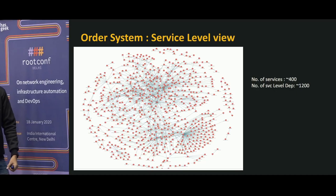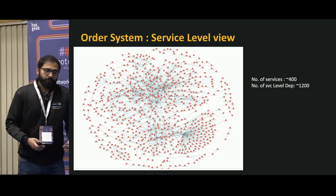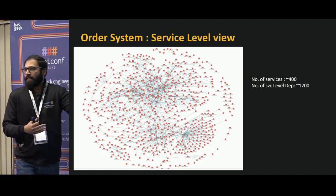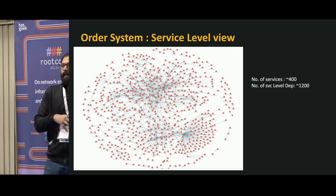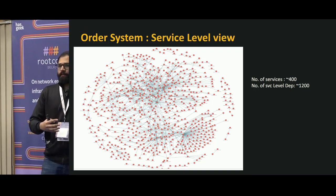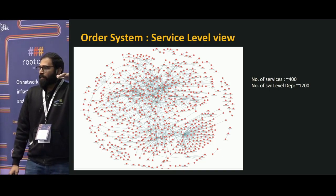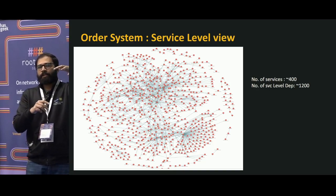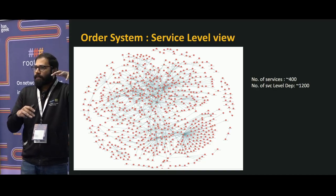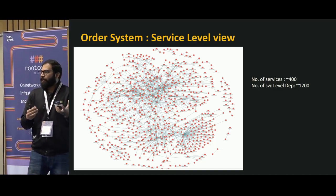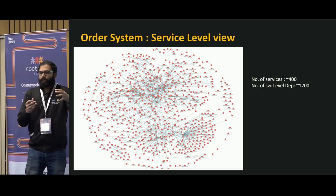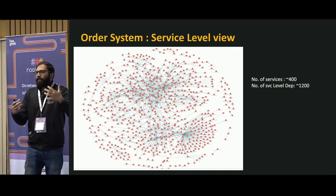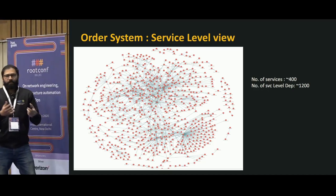This is the service-level view of the same system. The difference between application and service level: application level is higher order — one application can have multiple services under it. You give one app ID, which is an application, and under that application there can be multiple microservices, like a web application or a data store. It's nothing but clustering.